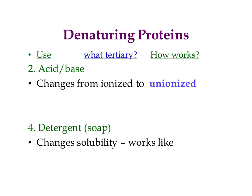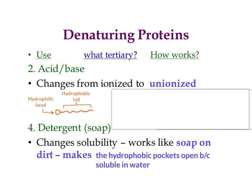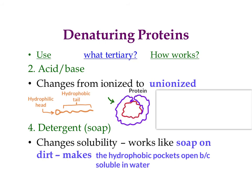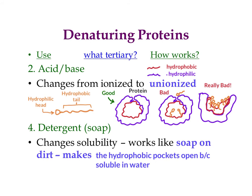When we add a detergent to proteins, this changes the solubility of some of the interactions. This works like soap on dirt — soap uses its hydrophobic tails to dissolve into the nonpolar part of the dirt. Proteins also have a nonpolar part, usually on the inside of the protein, while the outer side has hydrophilic parts that keep it soluble in water. The soap gets inside, brings its hydrophilic part where it's not supposed to be, which causes the pocket to open up and the whole protein becomes soluble in water — it unwinds completely and doesn't work as a protein anymore. The only interaction affected by detergent is the nonpolar, or hydrophobic, interactions.